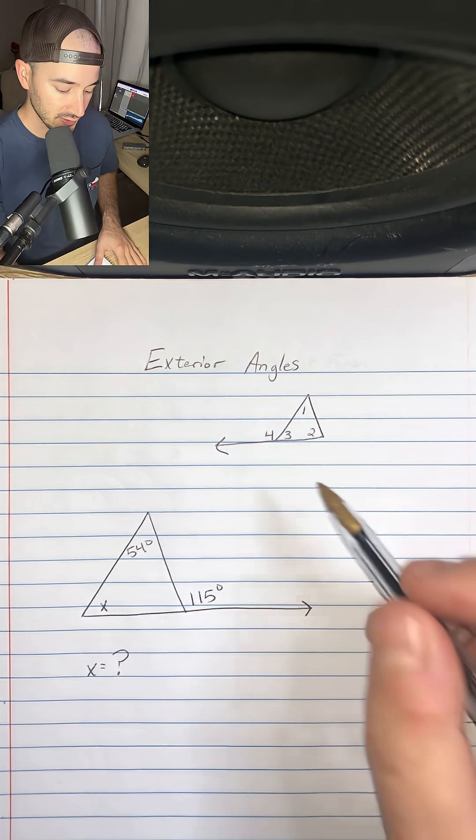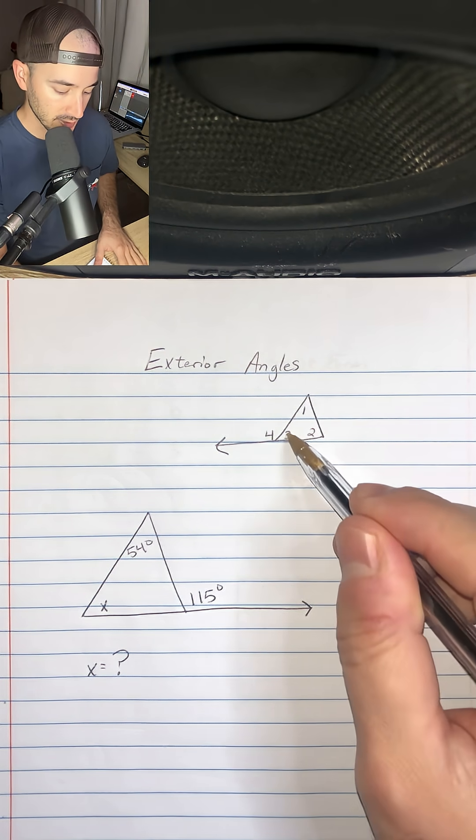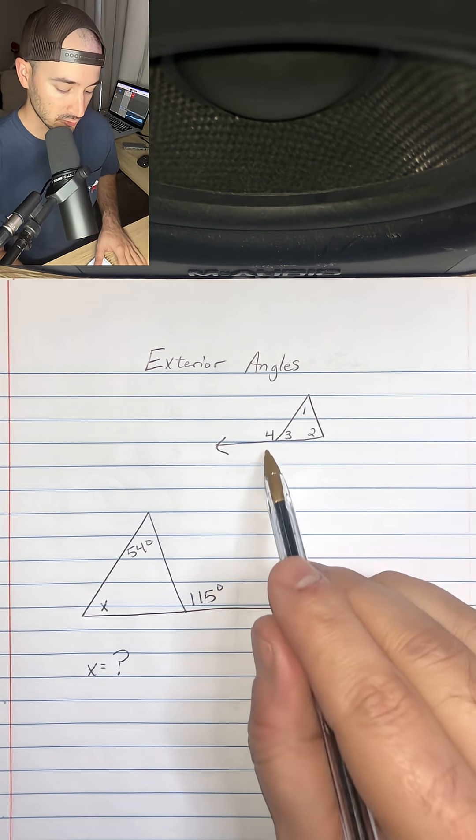is that anytime we have these interior angles 1, 2, 3, and an exterior angle, which is angle 4...